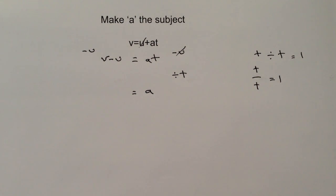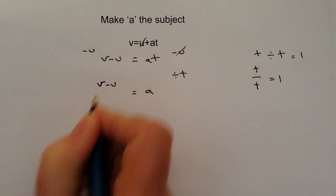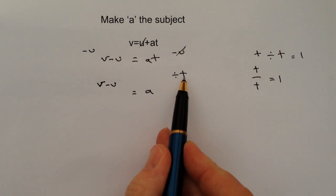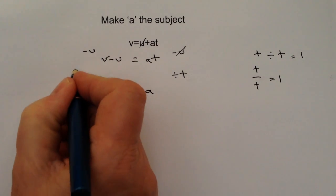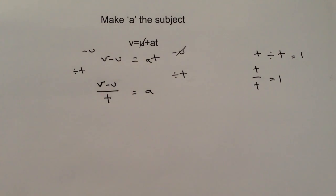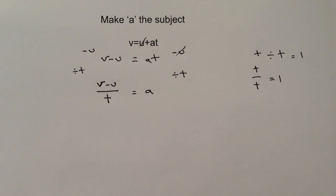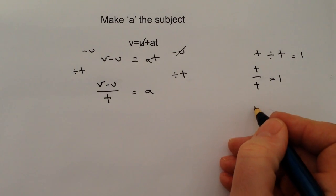So on the right hand side I've got 'a', which is fantastic news because that's exactly what I want because I'm making 'a' the subject. On the left hand side I've got still v minus u, but this time I'm going to divide by t on both sides, so it becomes v minus u divided by t.